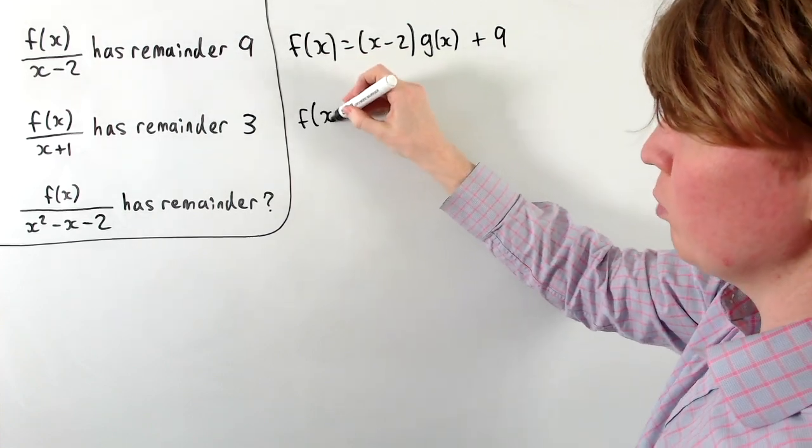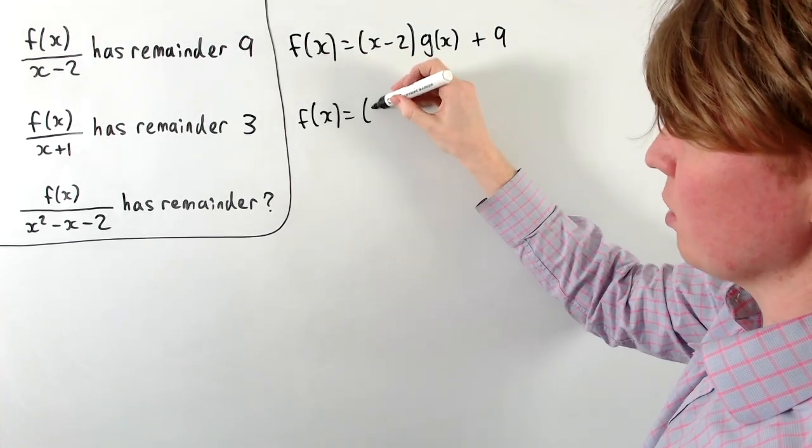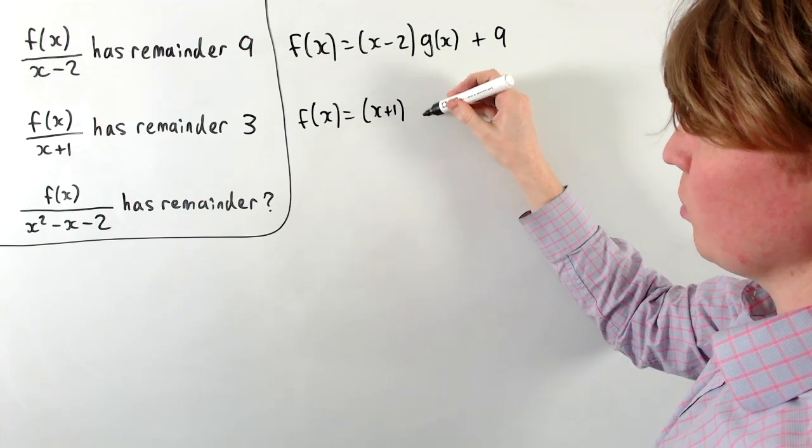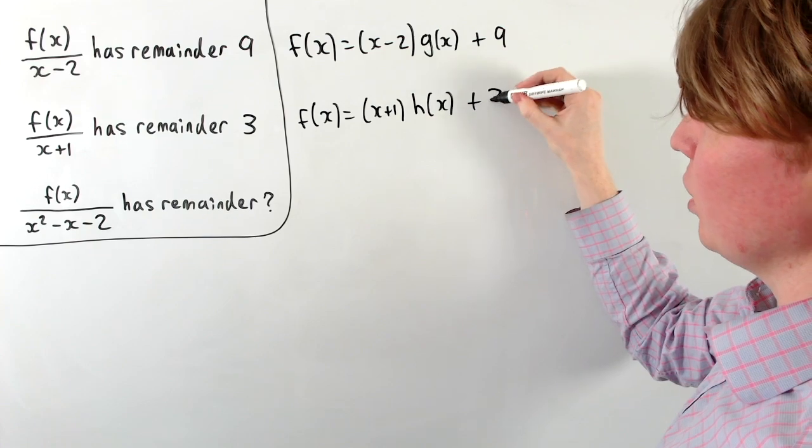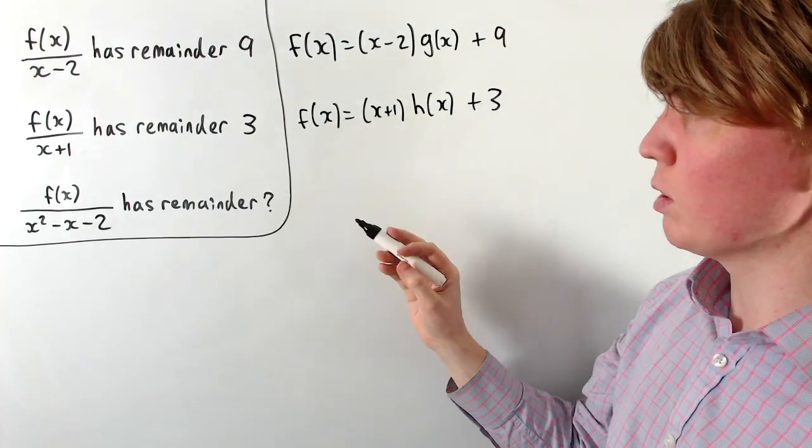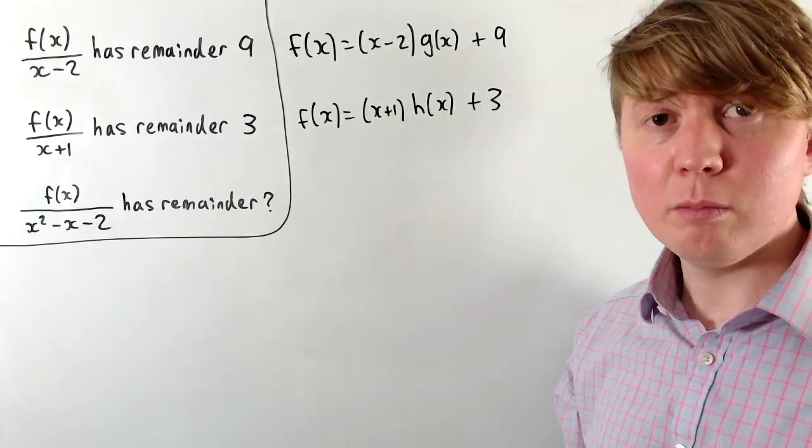Similarly for the second one, if we try and factor in x plus 1, this doesn't work. We get x plus 1 times, let's call this h(x) now, and then we get a remainder plus 3. So x plus 1 doesn't go into f(x), we get this remainder plus 3.